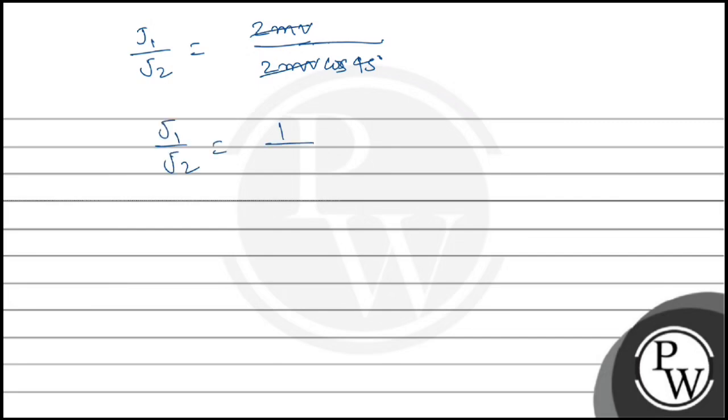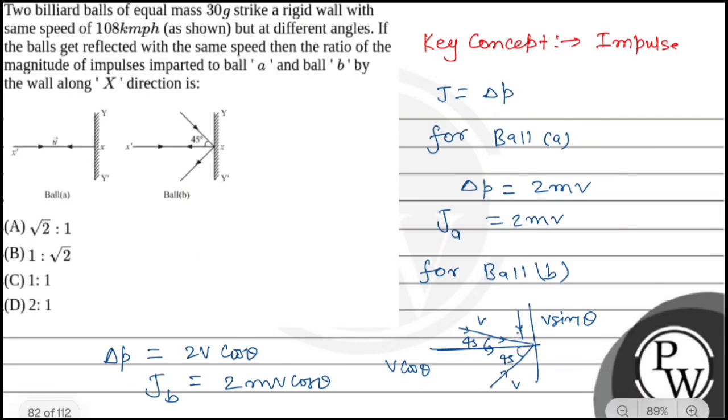That is 1 by root 2, so the ratio is root 2 is to 1. So the final answer is option A, that is root 2 is to 1. Hope you understood it well, all the best.